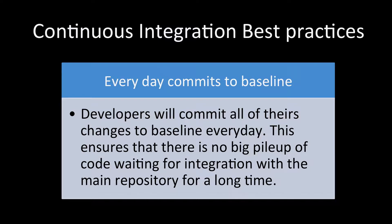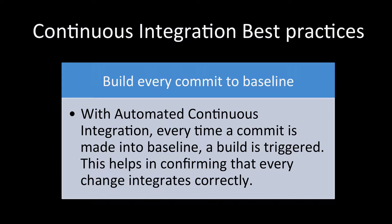Then we have build every commit to baseline. With automated continuous integration, every time a commit is made to the baseline, a build is triggered. For example, if you are using Git, you can use Git hooks so that whenever a commit happens it triggers the build, confirming that every change integrates correctly to the baseline.